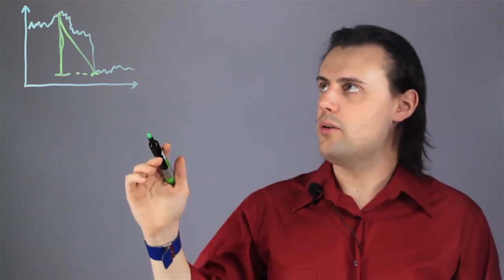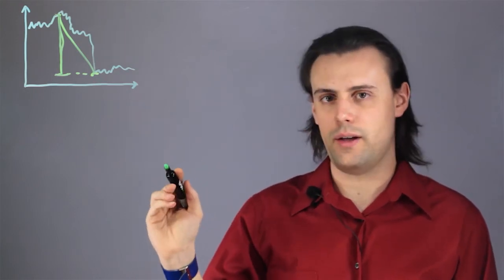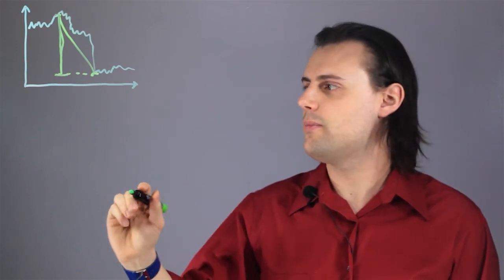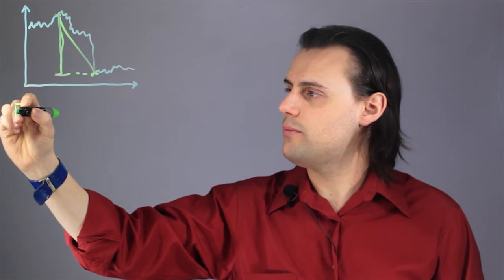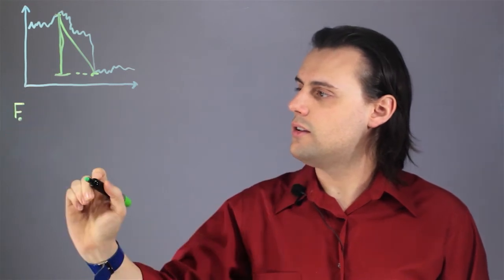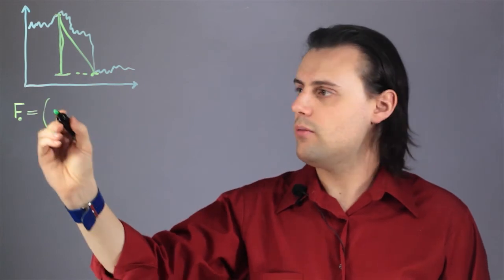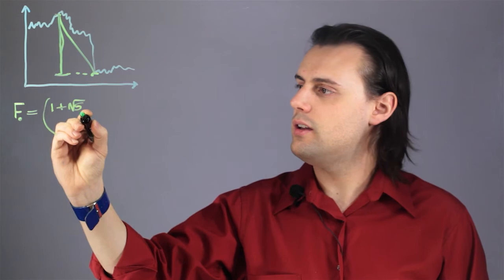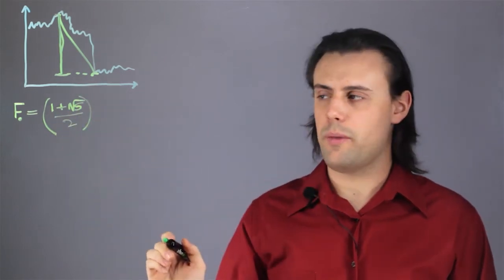The reason this is called a Fibonacci retracement is because it's based off of the famous mathematical sequence, the Fibonacci sequence. And the key Fibonacci ratios are determined by taking the golden ratio, which is equal to 1 plus the square root of 5 divided by 2, and raising it to different powers.